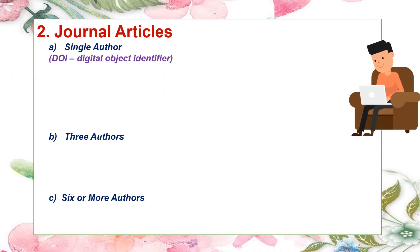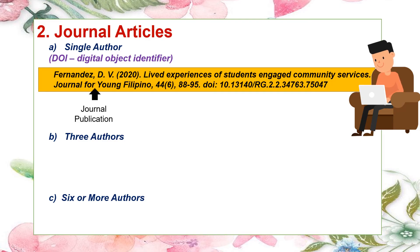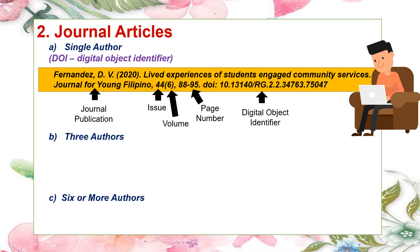For journal articles, single author: Fernandez, D.V. (2020). Lived Experiences of Students Engaged in Community Services. *Journal for Young Filipino*, 44, 688–95. DOI: 10.13140/RG.2.34763.75047. It is similar to the book reference citation format. However, it additionally includes the journal publication name — the first letter is capitalized and the journal title is italicized — followed by volume, issue, page number, and the digital object identifier (DOI). If DOI is not present, you can omit that part.